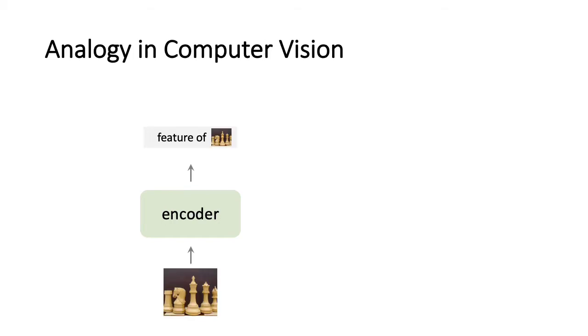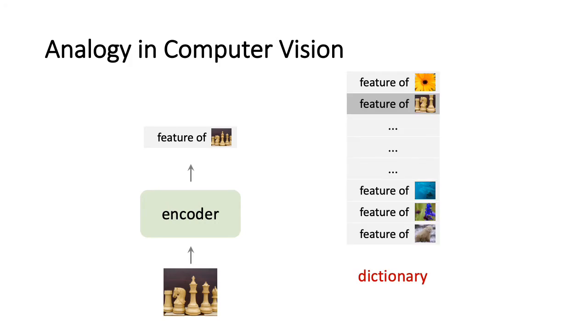As an analogy in computer vision, given an image, one can encode this image and view the feature as a query. The dictionary can be built up by the features of a large set of image samples. Then a loss can be defined following the dictionary lookup problem.